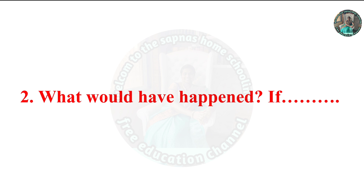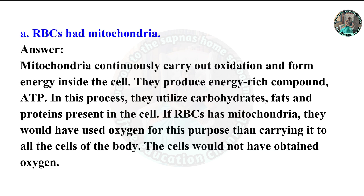Second question: 'What would have happened if...' Part A: If RBCs had mitochondria. Mitochondria continuously carry out oxidation and form energy inside the cell, producing the energy-rich compound ATP. In this process they utilize carbohydrates, fats, and proteins present in the cell. If RBCs had mitochondria, they would have used oxygen for this purpose instead of carrying it to all the cells of the body, so the cells would not have obtained oxygen.